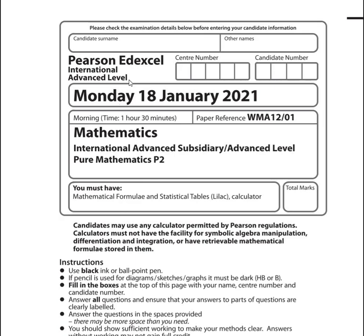Hello and welcome to my channel. Today we are going to solve Edexcel International Advanced Level January 2021 Pure Mathematics Paper 2 having a subject code of WMA1201.